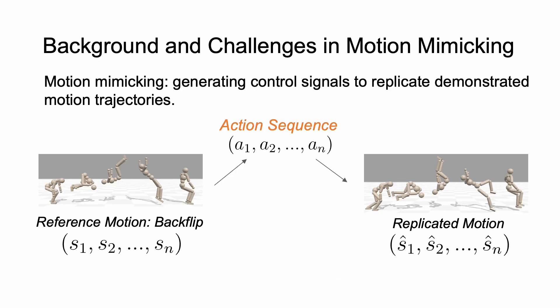Motion mimicking is a key component of physics-based character animation. It involves generating control signals that enable virtual characters to replicate demonstrated motion trajectories. Given the reference motion with the sequence of states, we aim to generate an action sequence to replicate the reference motion.